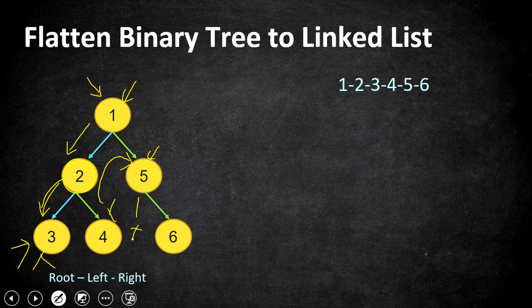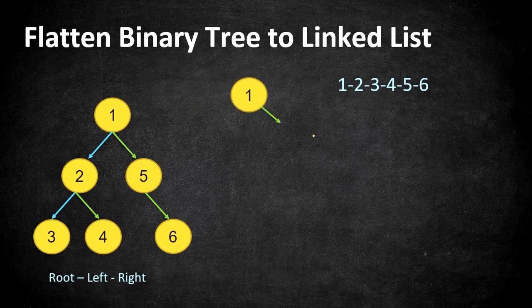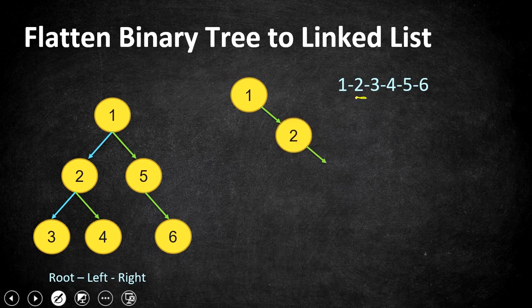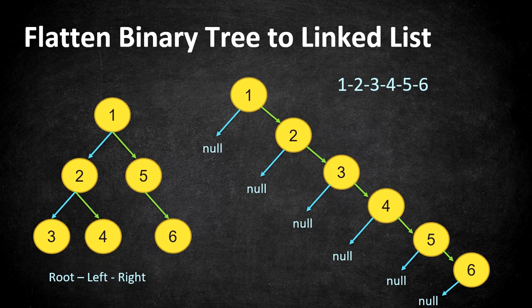We have to implement our linked list in the same tree node implementation, with no separate linked list class. Normally we'd chain nodes with a next pointer, but here we use left and right pointers. So we add the root node, its right child becomes 2 (the next node in pre-order), and all left nodes are set to null. Each subsequent node is placed as the right child of the previous one.